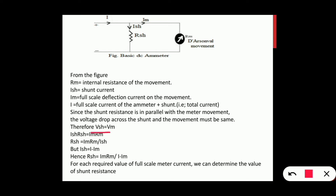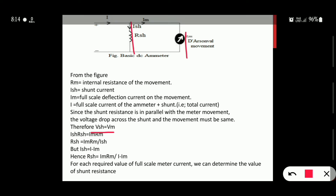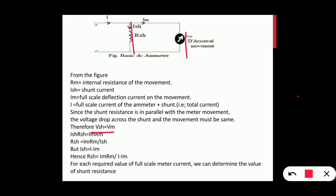Now, Vsh is equal to Vm. The total voltage is equal: Vsh equals Vm. Next, Ish × Rsh equals Im × Rm. Here, Ish × Rsh equals Im × Rm. But Ish is equal to I minus Im.